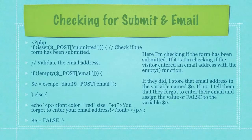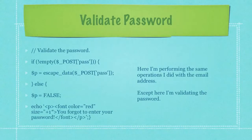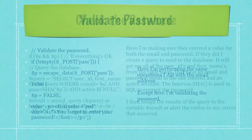If it is, I'm checking if the visitor entered an email address with the empty function. If they did, I store that email address in the variable named e. If not, I tell them that they forgot to enter their email and assign the value of false to the variable e.